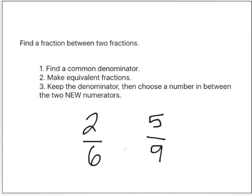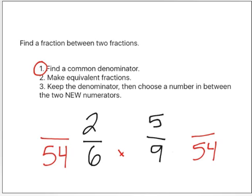Let's find a fraction between two-sixths and five-ninths. First, we're going to make a common denominator. So I'm going to take six times nine, which is fifty-four, and I'm going to write that next to both fractions. Now I need to think to myself, nine times what is fifty-four? Nine times six. I'm going to take five times six, and that's thirty.